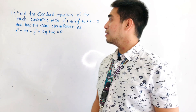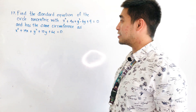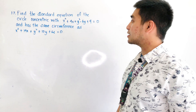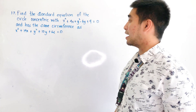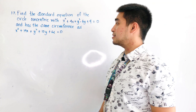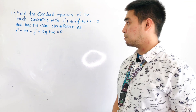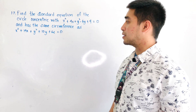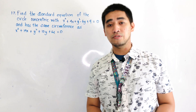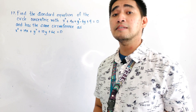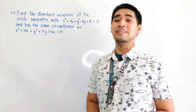For today's example, find the standard equation of the circle concentric with x² + 4x + y² - 6y + 9 = 0 and has the same circumference as x² + 14x + y² + 10y + 62 = 0. Before we answer this problem, let us first analyze all the given.